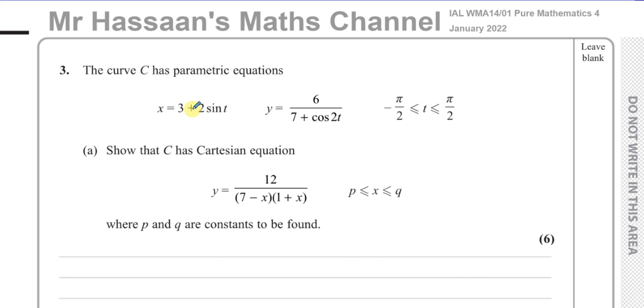Now if I can make the sine T the subject of this equation here, so I have X minus 3 divided by 2. So I can say X minus 3 divided by 2 is equal to sine T. Just rearranging that equation.